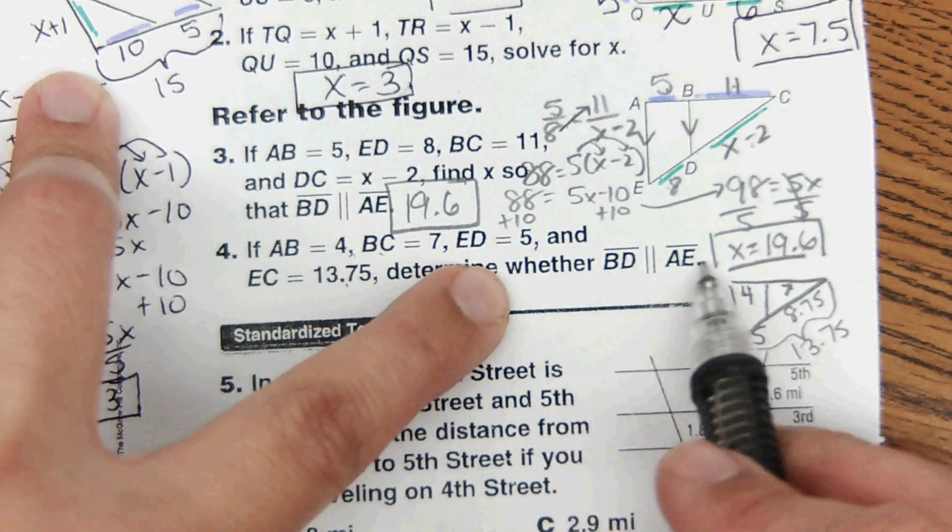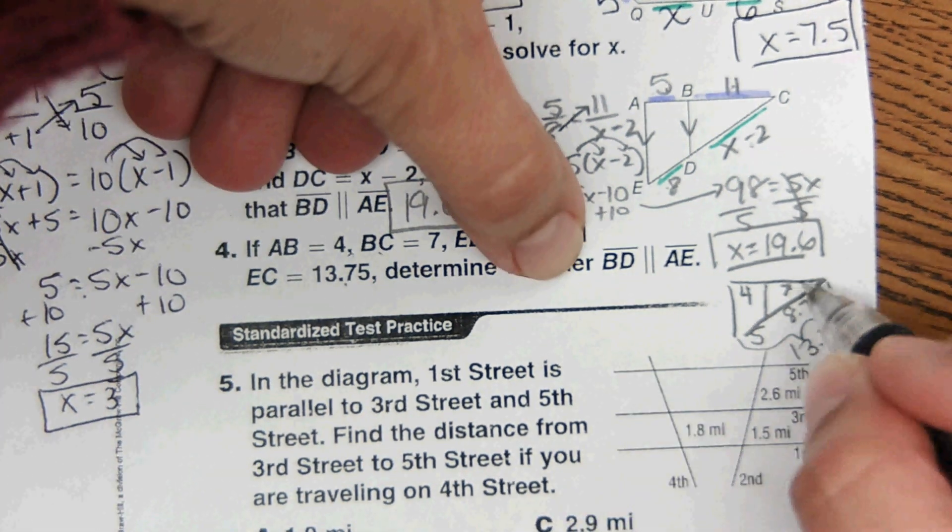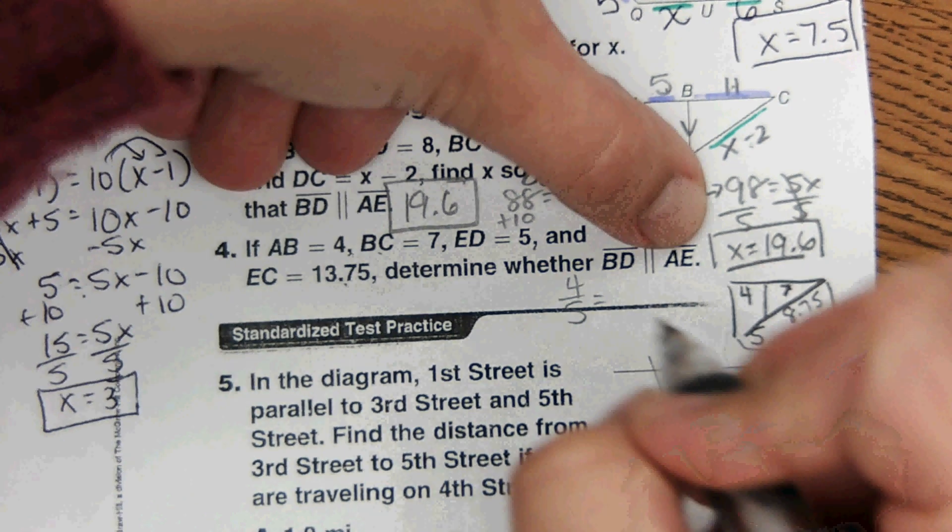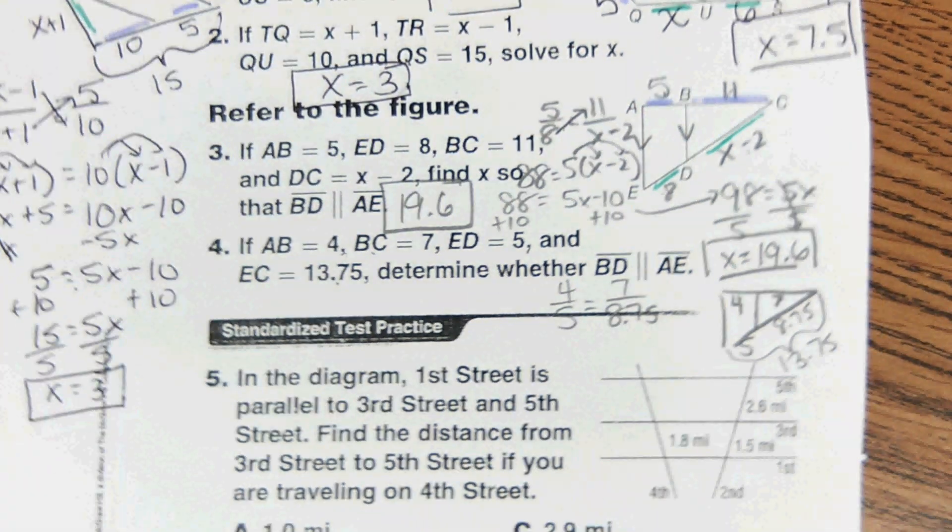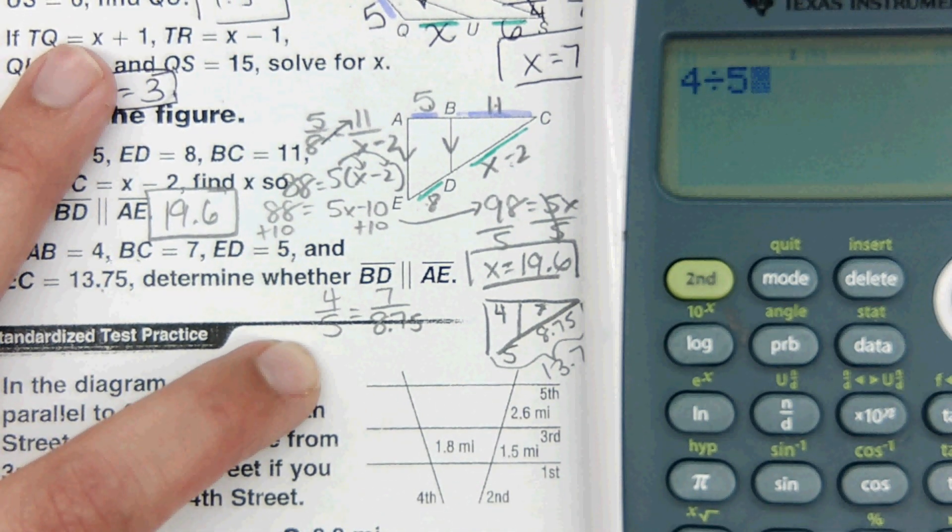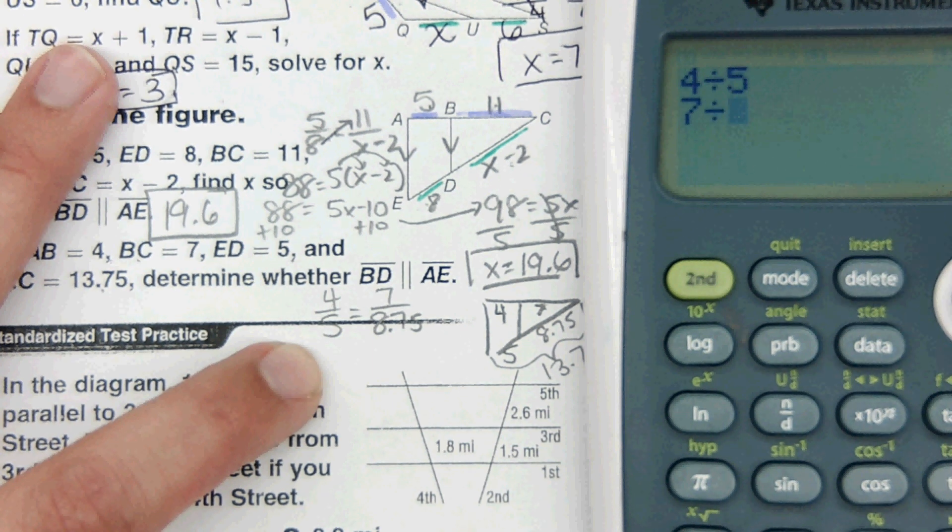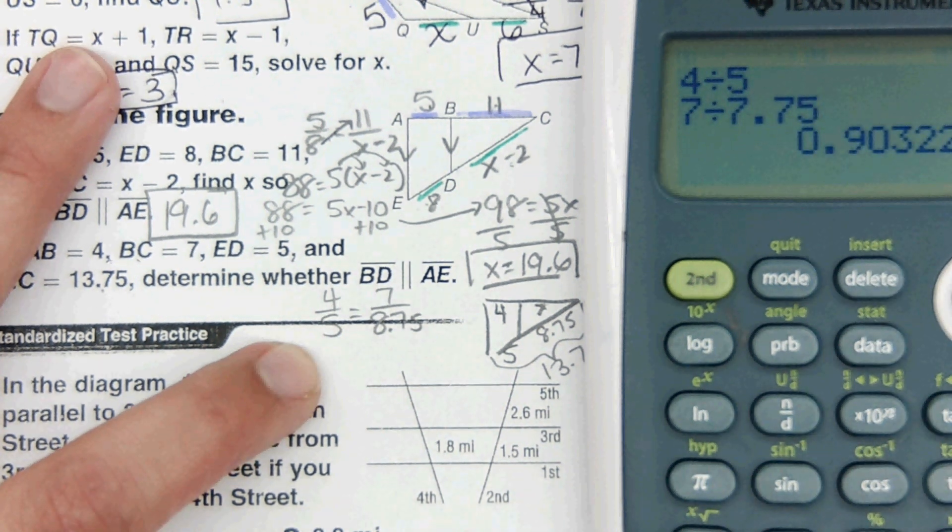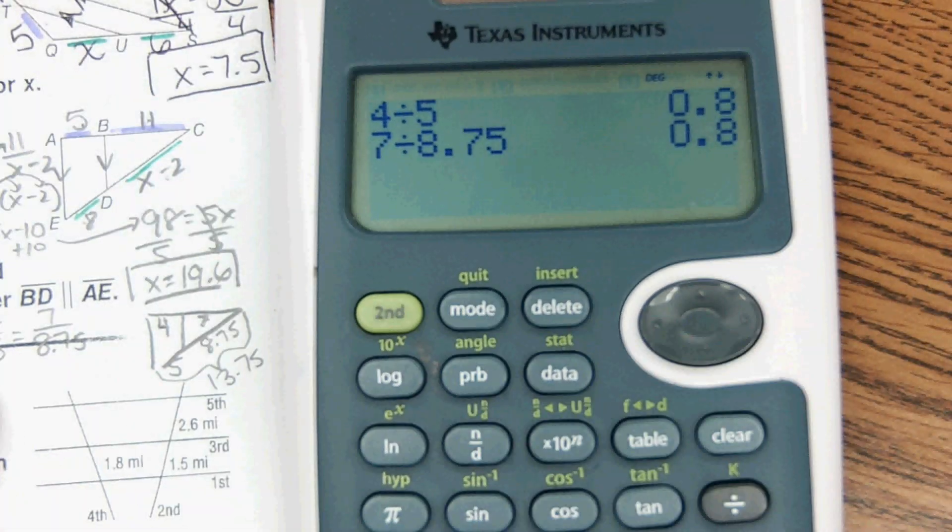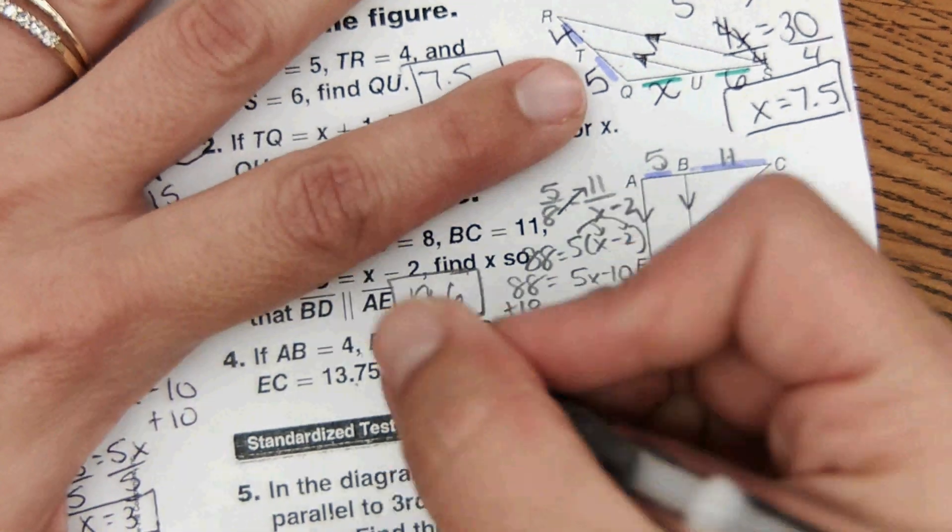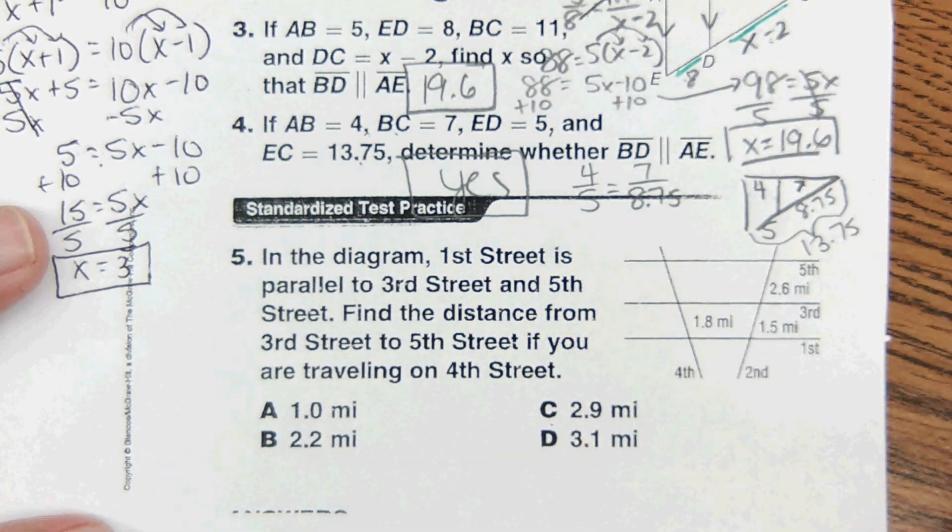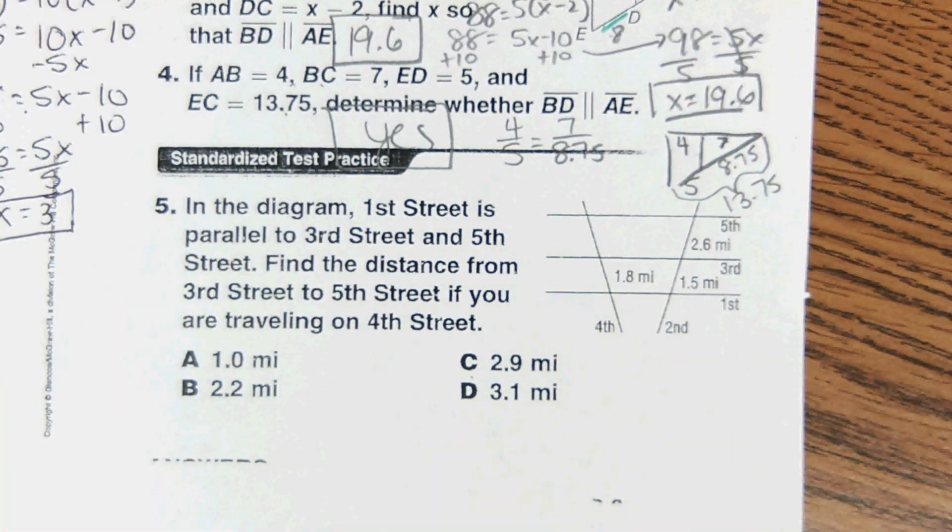Okay, so it says just determine whether they are parallel. So if these are equivalent ratios, then they're parallel. If 4 over 5 equals 7 over 8.75, then they're parallel. So in the calculator, I would just do 4 divided by 5, and 7 divided by 8.75, and oh, I hit the wrong button. 4 divided by 5, 7 divided by 8.75 is 0.8 each time. It equals 0.8 each time. So this would be a yes. They are parallel because those are equivalent ratios.